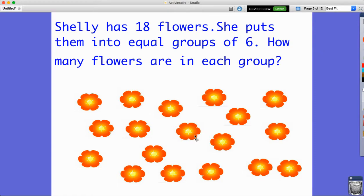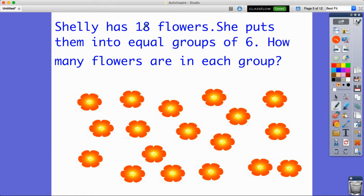We're going to look at the information given to us in the problem. It says she has 18 flowers - this is our total - and she wants to put them into equal groups of six.